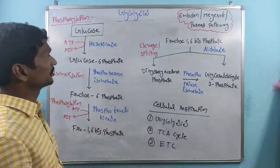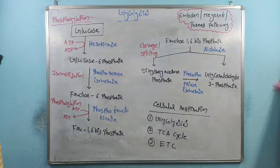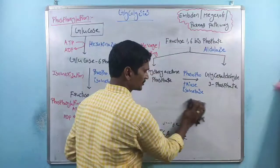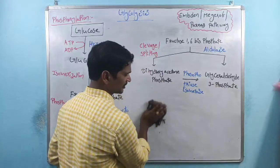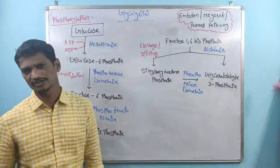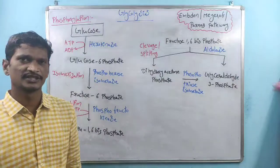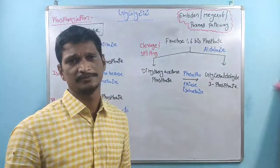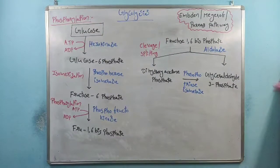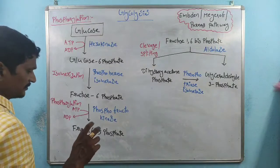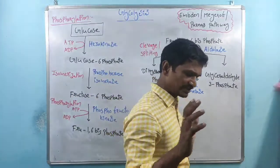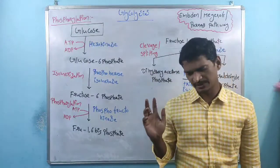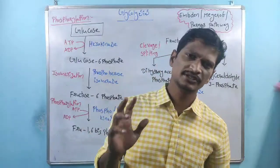Today we are discussing about the glycolysis pathway. Glycolysis occurs within the cytoplasm, because the enzymes are available within the cytoplasm. Within the glycolysis pathway, majorly ten steps are present. All these steps take place within the cytoplasm.